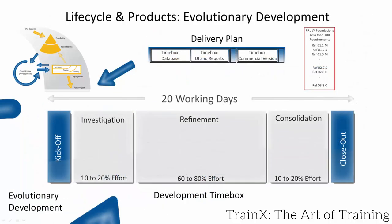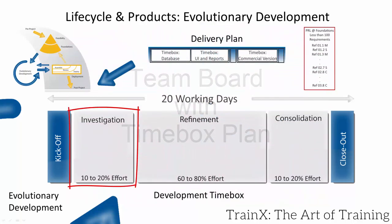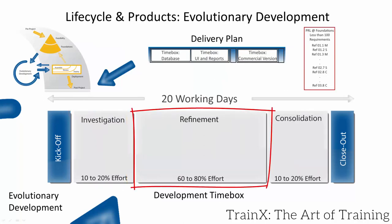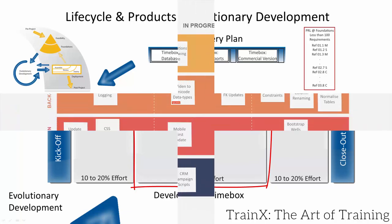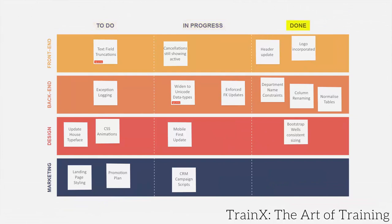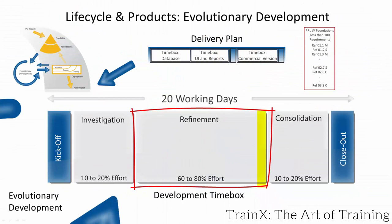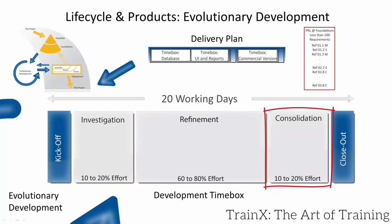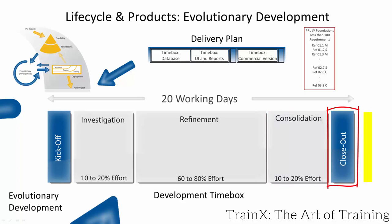Here we revisit timeboxing with further detail. After kick-off comes investigation, where the timebox plan is created and typically recorded on a whiteboard called the team board. The plan shows allocated resources with a sequence of activities. The investigation review takes place to inform development during refinement. In refinement, the main development work is done, driven by MoSCoW priority and practicality. Some teams will use Kanban — a system of indicating work to be done, work in progress and work completed. Easily visible whiteboards are sometimes referred to as information radiators or big visible charts. The refinement review informs consolidation, where loose ends are tied up so deliverables meet acceptance criteria. No new work is begun here even for a remaining must.